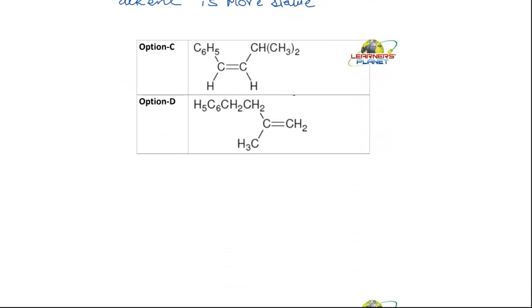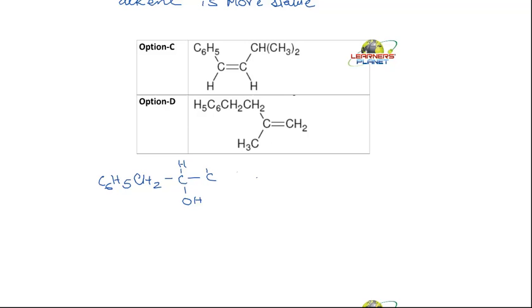Let's carry out the dehydration process. What is the structure of the compound? It is C₆H₅-CH₂-CH(OH)-CH(CH₃)₂. So the structure has a phenyl group, then CH₂, then a CH bearing the OH group, and then a CH with two CH₃ groups.